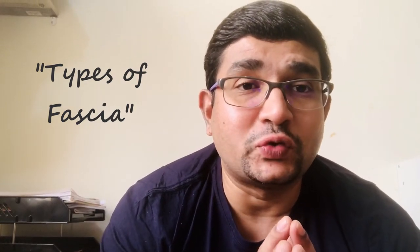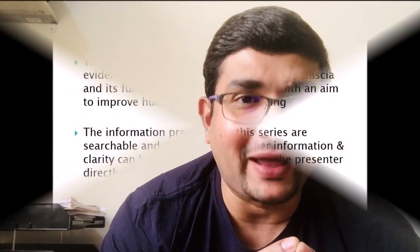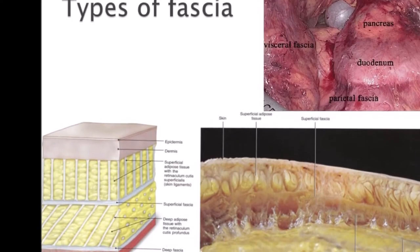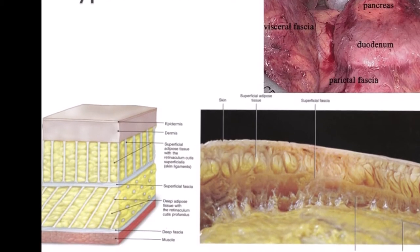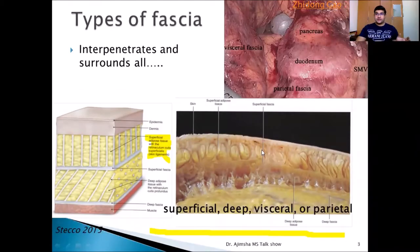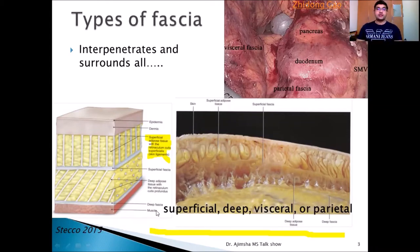Types of fascia. Fascia can be simply and generally divided into three types: superficial fascia, deep fascia, and visceral or parietal fascia.